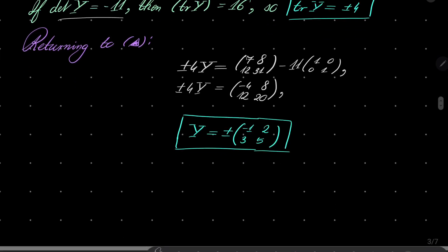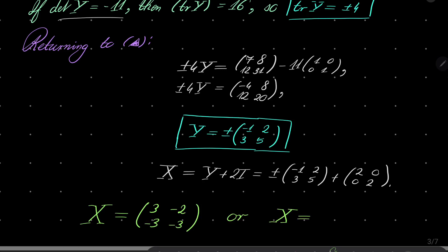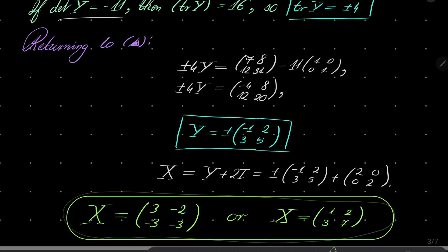Now for our original matrix X: since X equals Y plus 2I, we add [[2,0],[0,2]] to each solution. This gives two solutions: X is either [[1, 2],[3, 7]], or X is [[-1+2, 2],[ 3, 5-2]] — after basic arithmetic, X equals either [[3, -2],[-3, -3]] or [[1, 2],[3, 7]]. Our matrix equation has exactly two solutions with integer entries.